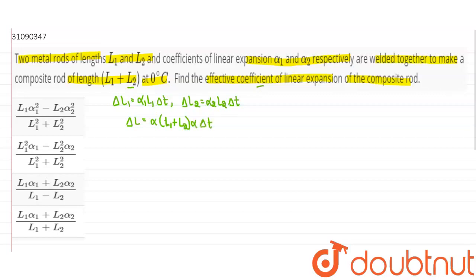Okay, now we can say that the delta L is what will be the summation of two. Change in total length is equal to change in length of 1 plus change in length in 2. Delta L we can say alpha L1 plus L2 delta t is equal to...